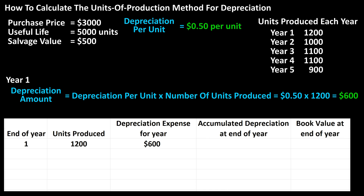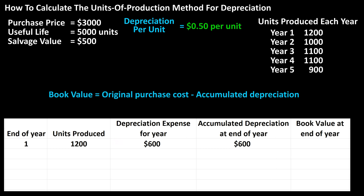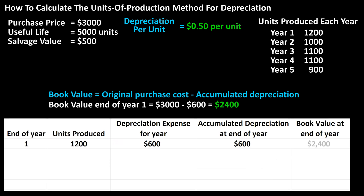This calculates to $600, which is the depreciation expense for year one. For the accumulated depreciation column, at the end of year one the total depreciation is $600. The book value at end of year is the original cost minus accumulated depreciation, so $3,000 minus $600 equals $2,400. Year one is complete.